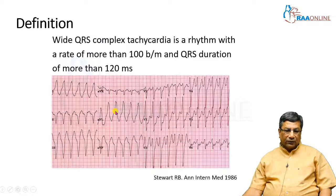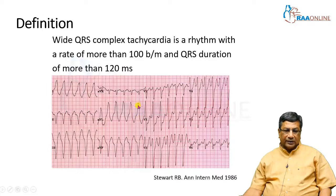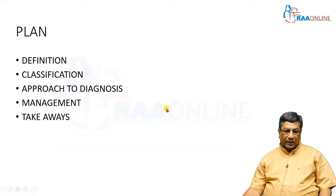The definition of wide QRS complex tachycardia, in contrast to narrow QRS complex tachycardia: the heart rate is more than 100, but the QRS duration is more than 0.12 seconds, or 120 milliseconds. That is the definition of wide QRS complex tachycardia.